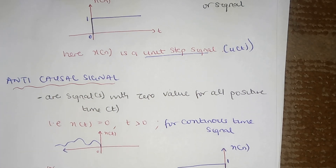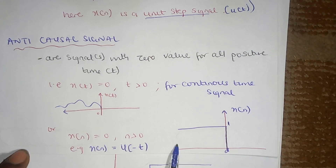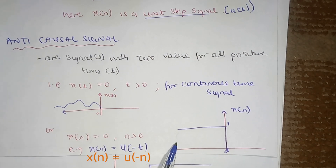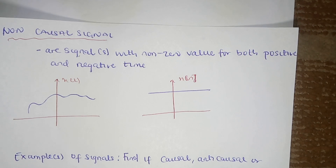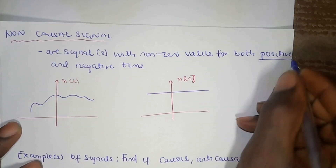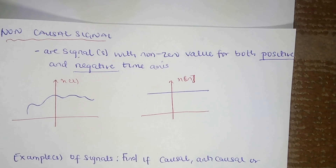Non-causal is not the opposite of causal. Anti-causal signals have zero value for all positive time, or equivalently, anti-causal signals have value only in the negative time axis. For continuous signals, here is the way it looks. If it is discrete, here is the way it is going to be. Now let's look at the last type of signal: non-causal. A non-causal signal is a signal with non-zero value for both positive and negative time axis.